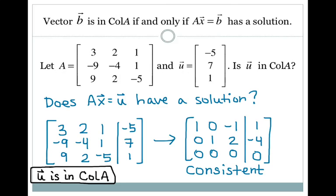I can prove that U can be written as a linear combination of the columns of A by actually finding a solution to the system Ax equals U. By looking at this, I can see that U is equal to column 1 minus 4 times column 2 plus 0 times column 3. So U can be written as a linear combination of the columns, which by definition puts it in the column space of A.